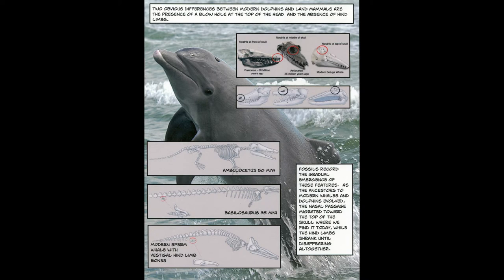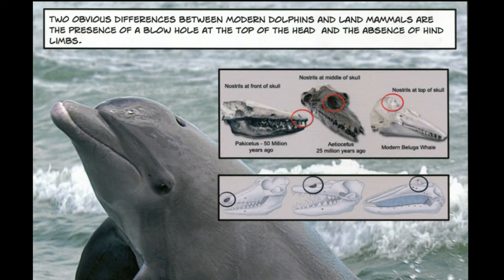Two obvious differences between modern dolphins and land mammals are the presence of a blowhole at the top of the head and the absence of hind limbs. Let's take a look at the photo at the top — it shows how the nostril moves from the front of the skull to the top of the skull. The first photo is from 50 million years ago, the middle is 25 million years ago, and the photo on the right is a modern beluga whale today with the nostrils at the top of the skull.